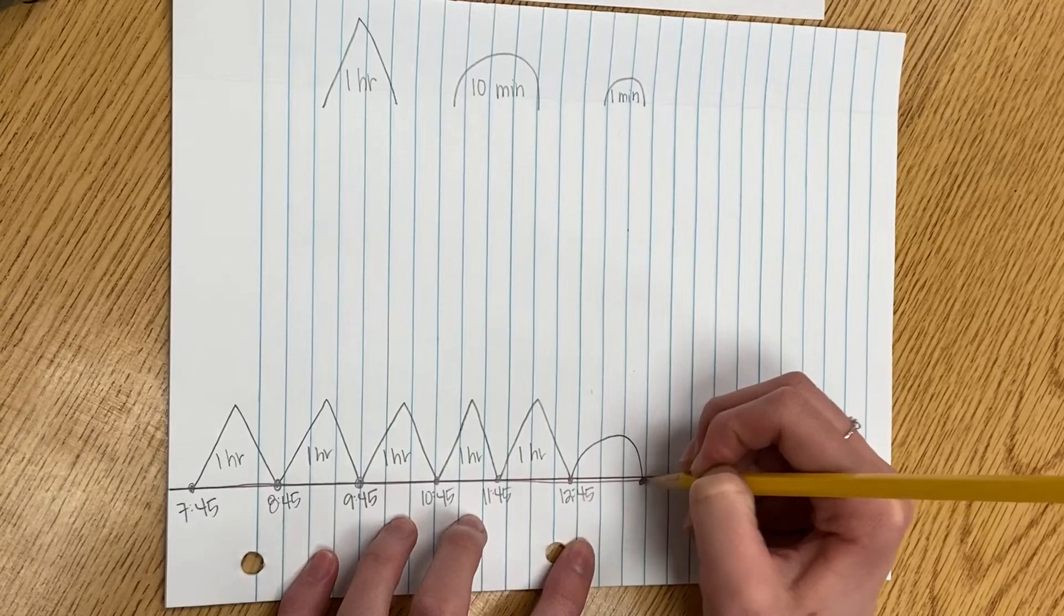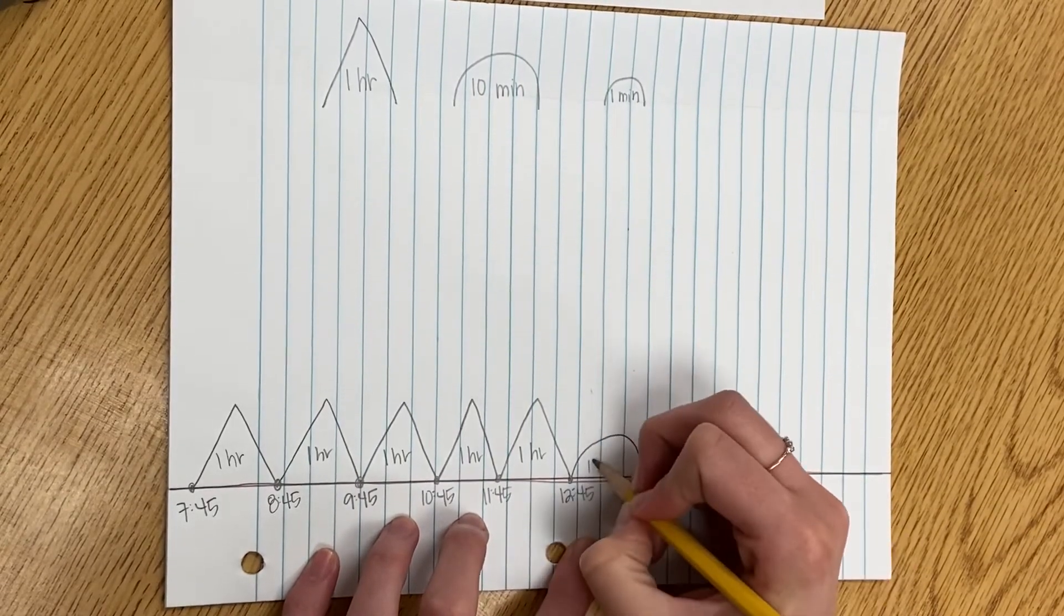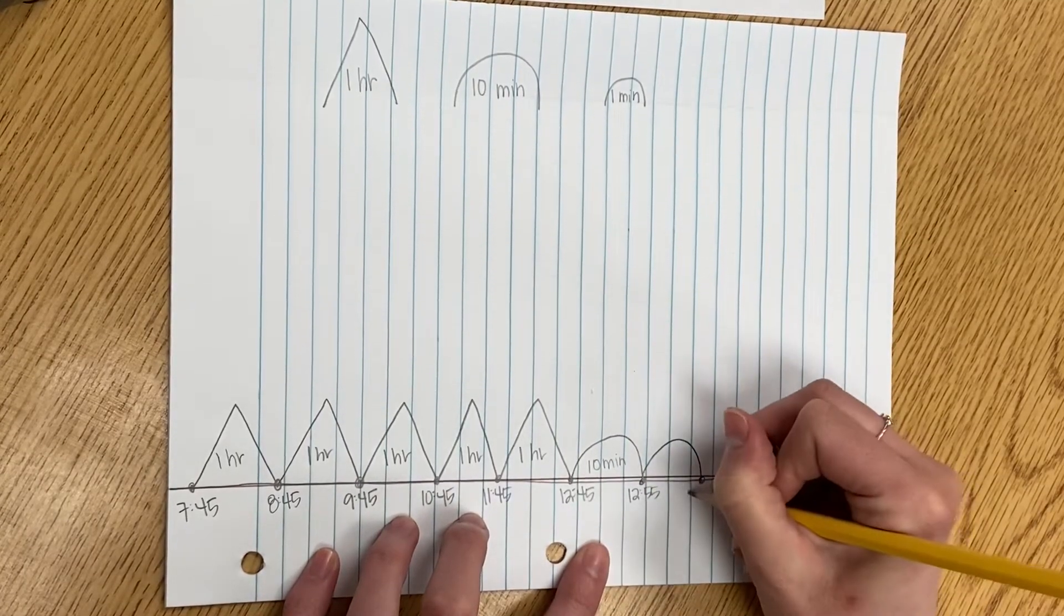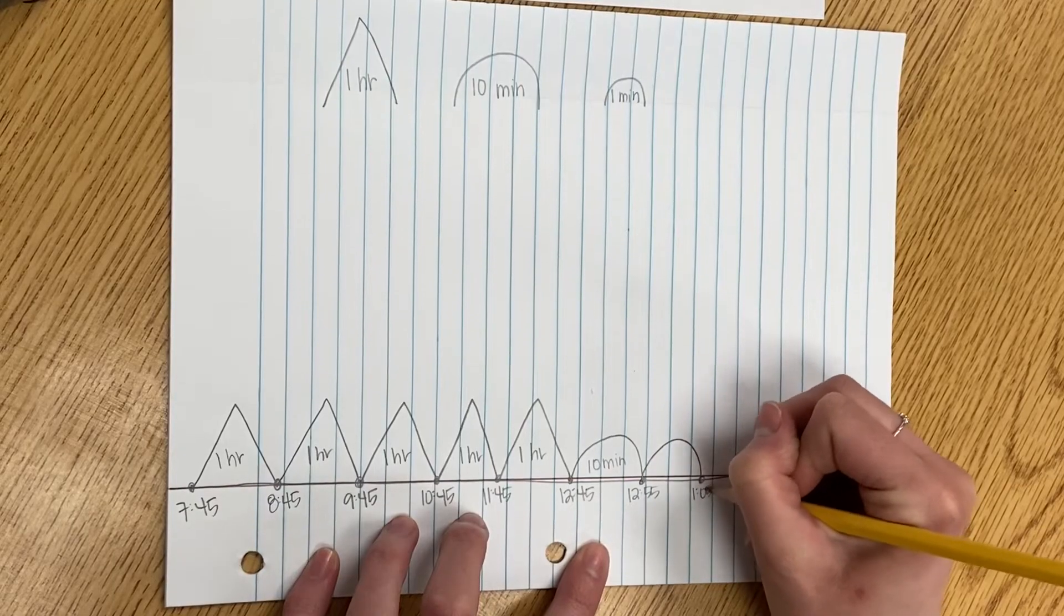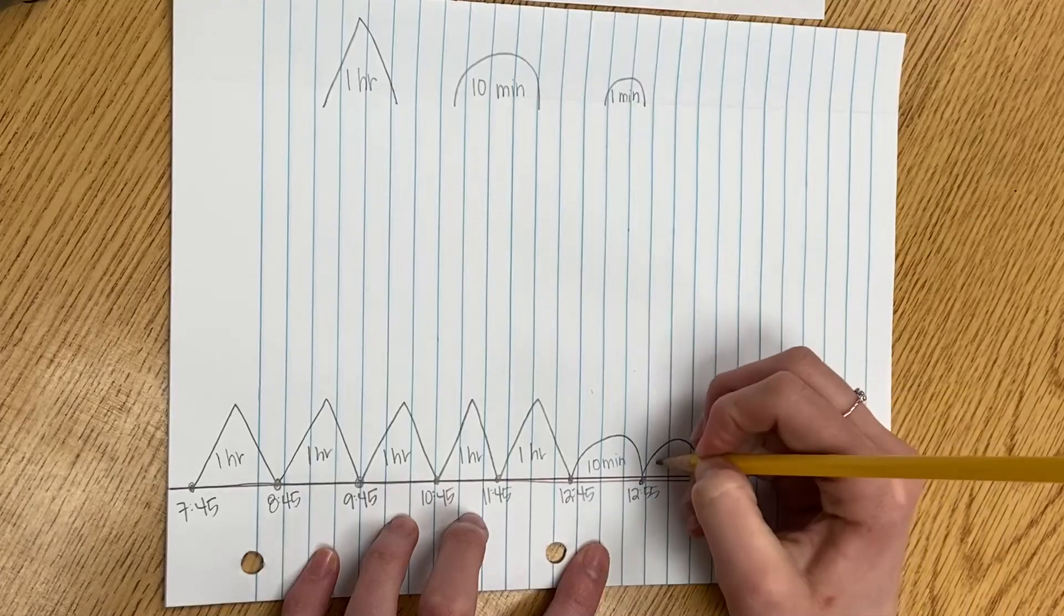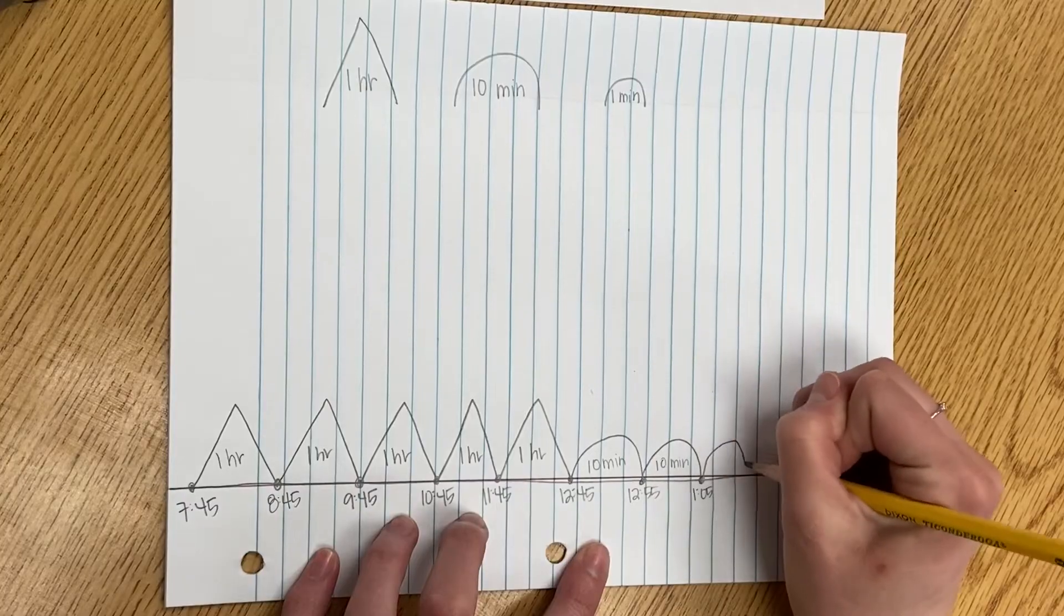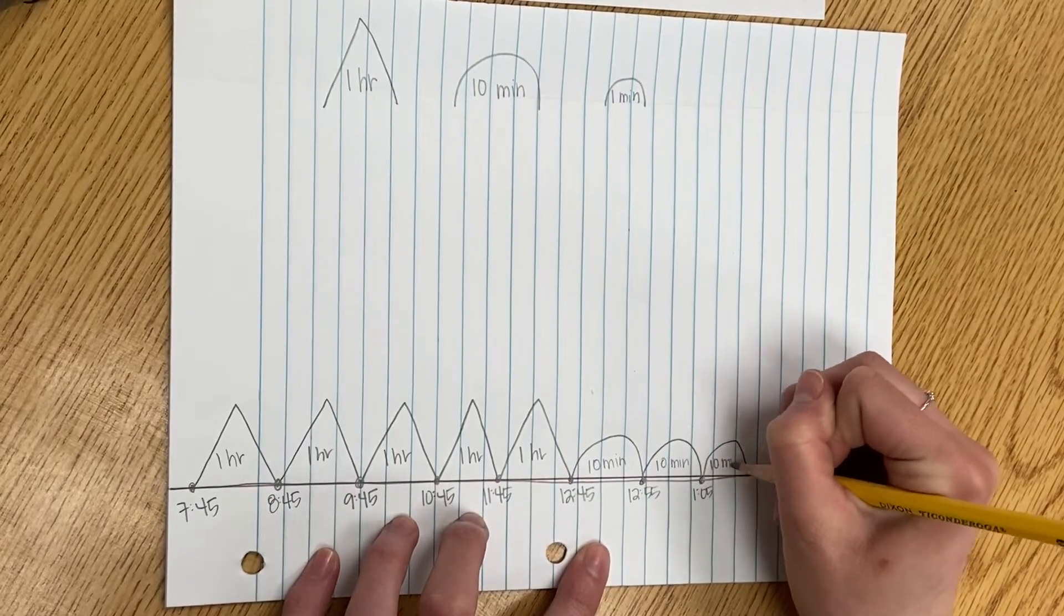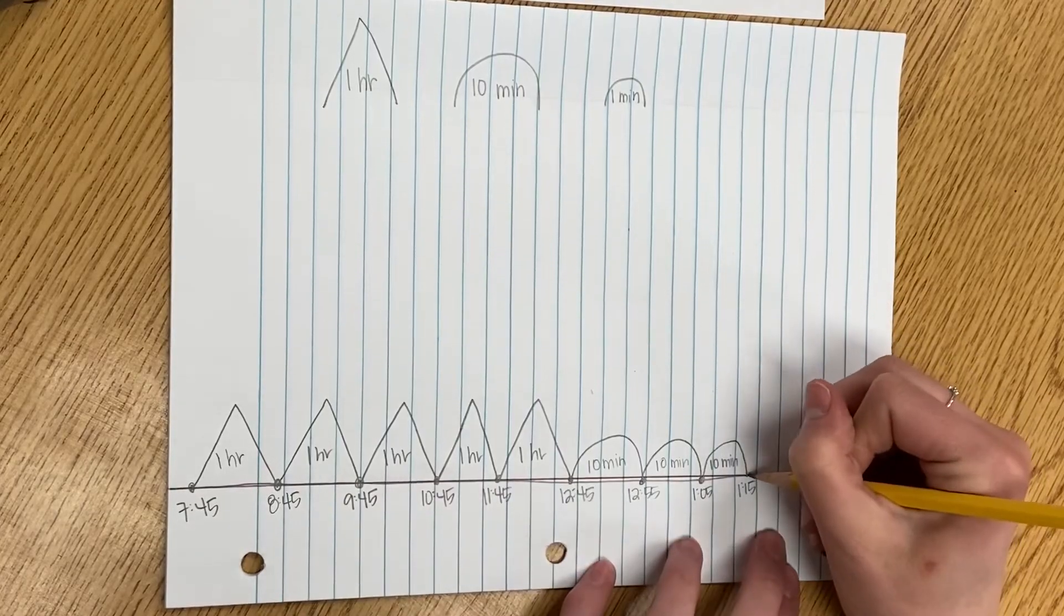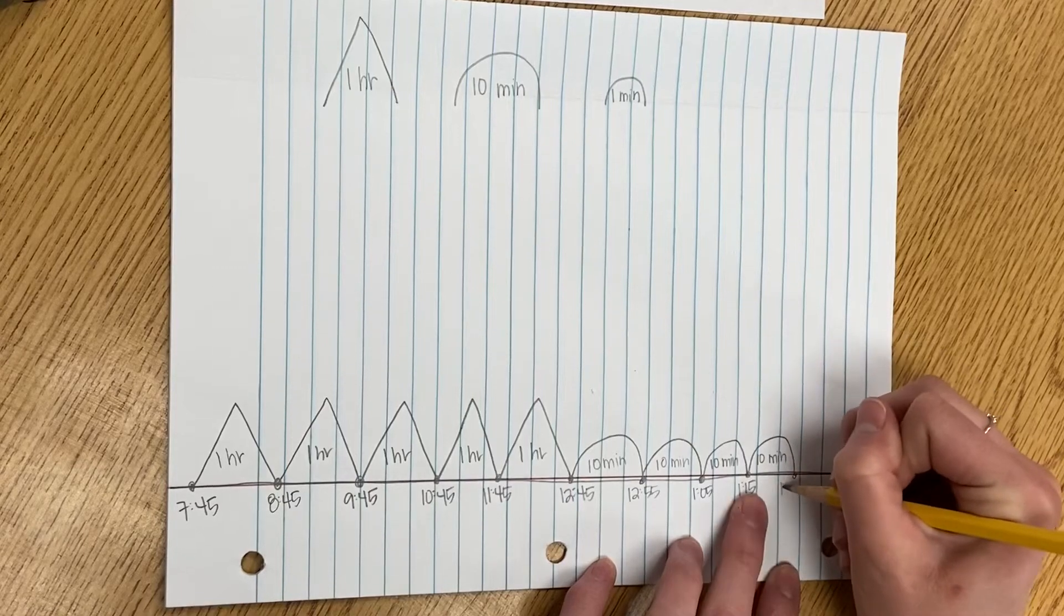12:45 plus 10 more minutes is 12:55 plus 10 minutes. 12:65 doesn't make sense. I've never seen that on a clock. When I get to 60, I'm at the next hour, which is 1 o'clock, so I add 10 minutes and get to 1:05. 10 more minutes puts me at 1:15, and I get to 1:25.